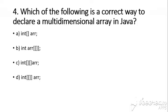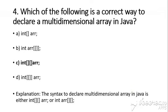Question number 4: Which of the following is the correct way to declare a multidimensional array in Java? The answer is C, that is: int[][] array. The syntax to declare a multidimensional array in Java is either int[][] or int array[][], both methods are correct.